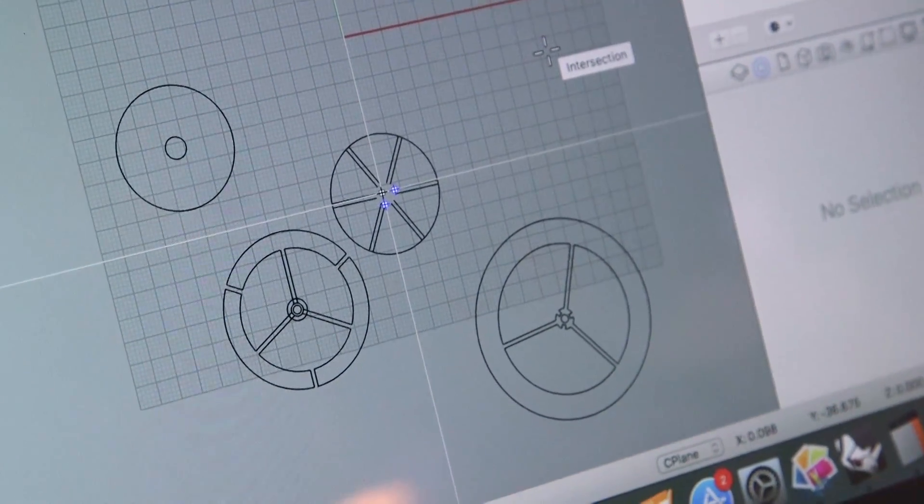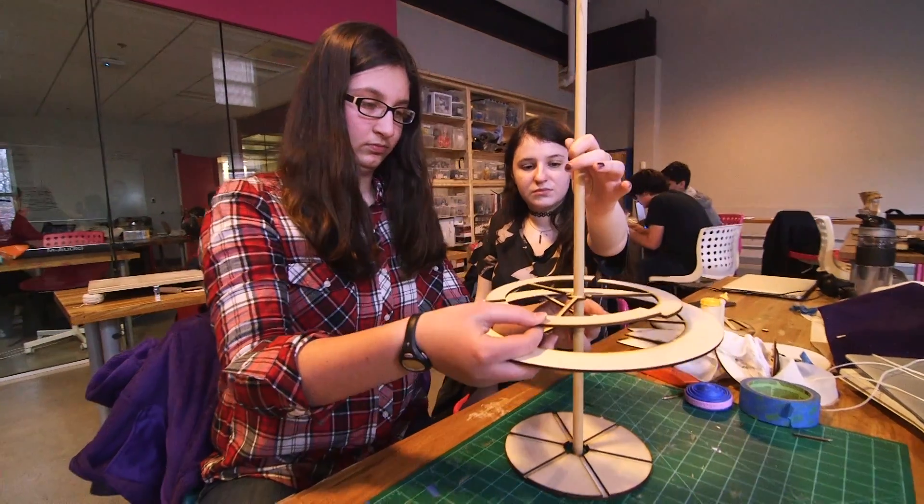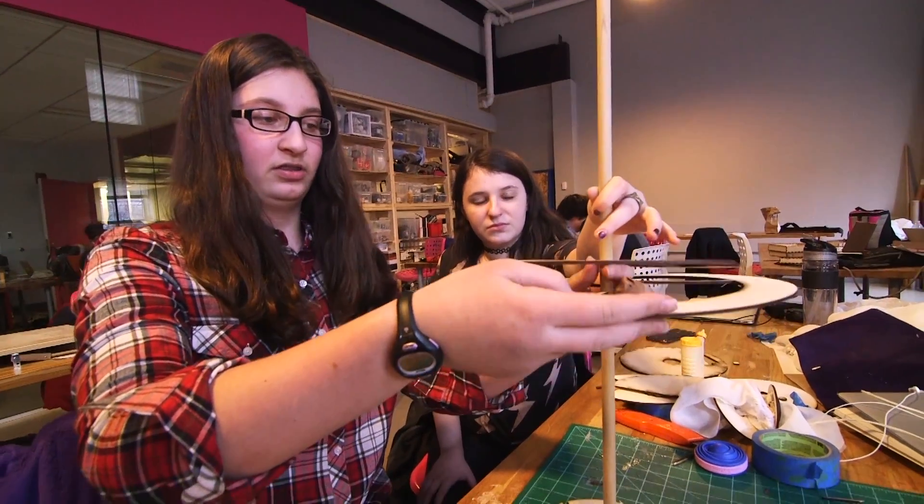Our table is a table that can change sizes, so it can either seat two people, four people, or six people. It does that by raising rings sort of like an umbrella so that they go up and down to change the size.